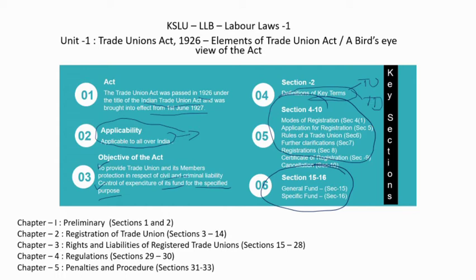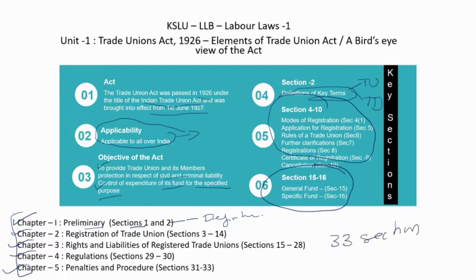Overall, there are five chapters in this act. Chapter 1 is the preliminary part covering Sections 1 and 2, mainly definitions of key terms. Chapter 2 deals with registration of a trade union. Chapter 3 discusses rights and liabilities of a registered trade union. Chapter 4 deals with regulation, and Chapter 5 deals with penalties and procedure. Put together, there are 33 sections in this act.